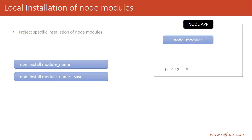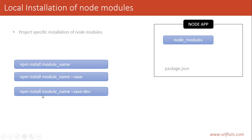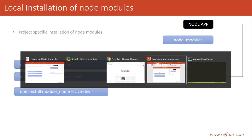The second command is npm install module-name --save. This is a flag used while installing a module and we will see why this flag is used. The third way to install a node module locally is npm install module-name --save-dev. We will also see why this flag is used. We will create a project and see by doing hands-on how node modules are installed locally.